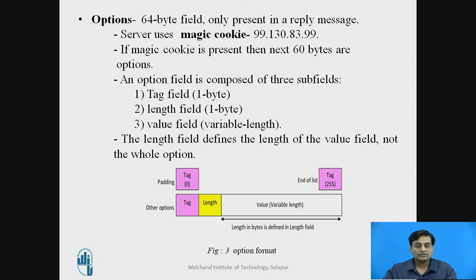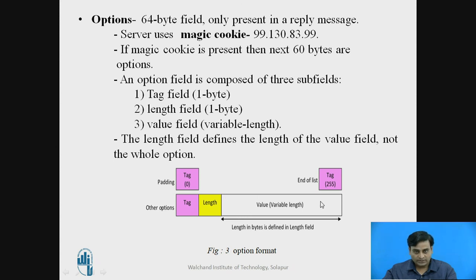The first subfield is the tag field, the second is the length field, and these two are one byte long each. The third subfield is the value field, which has a variable length. The length field, shown in yellow color in figure 3, defines the length of the value field — it does not indicate the length of the whole message.